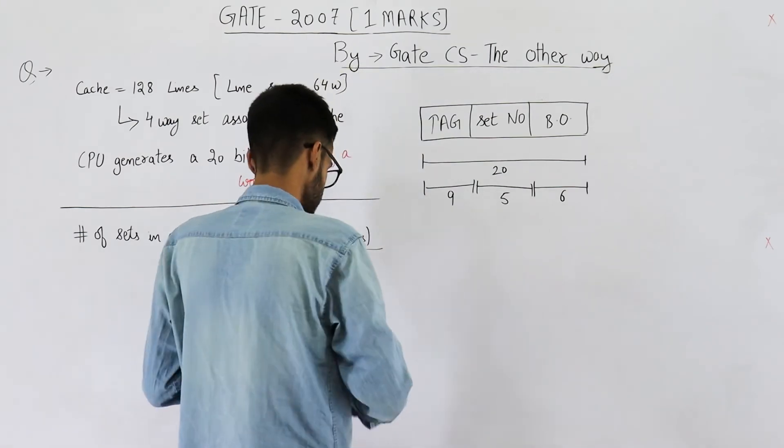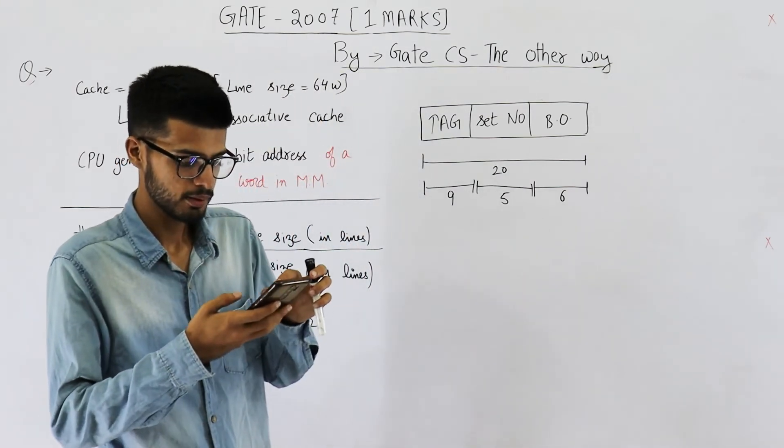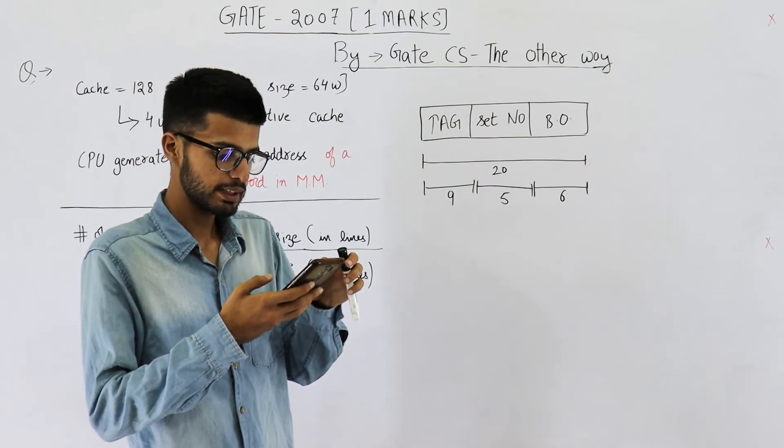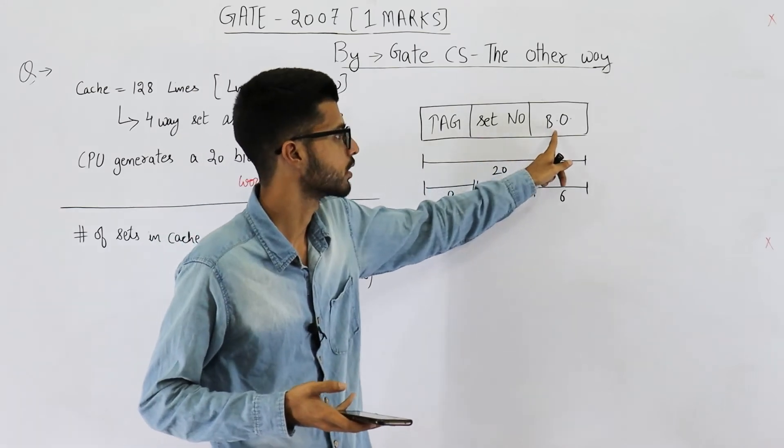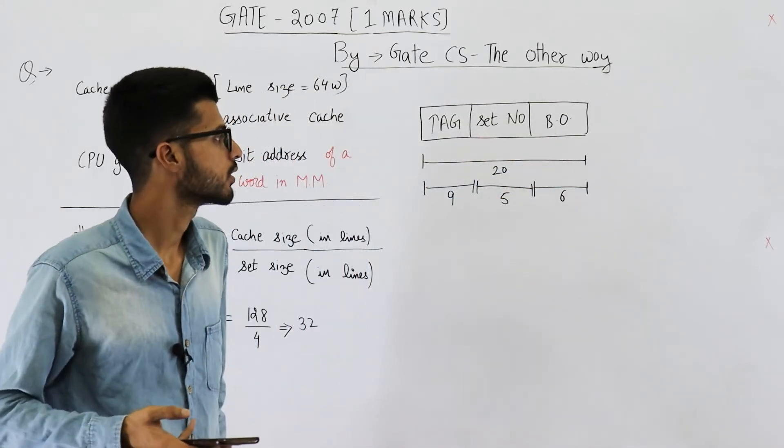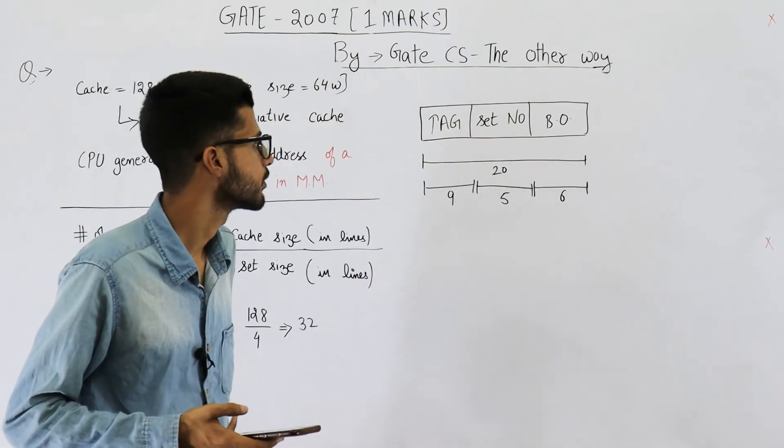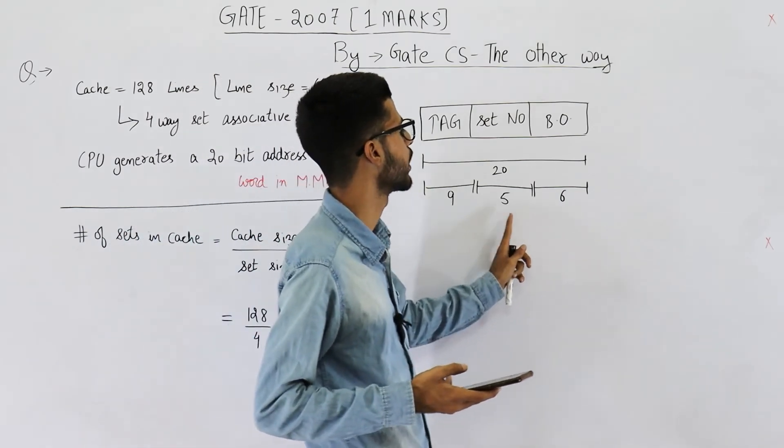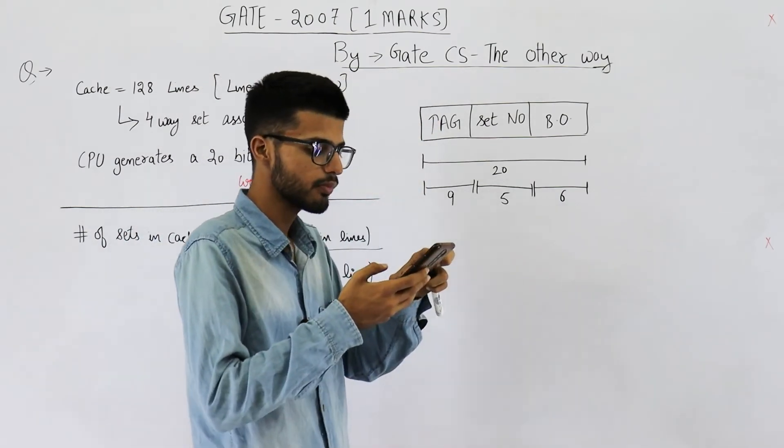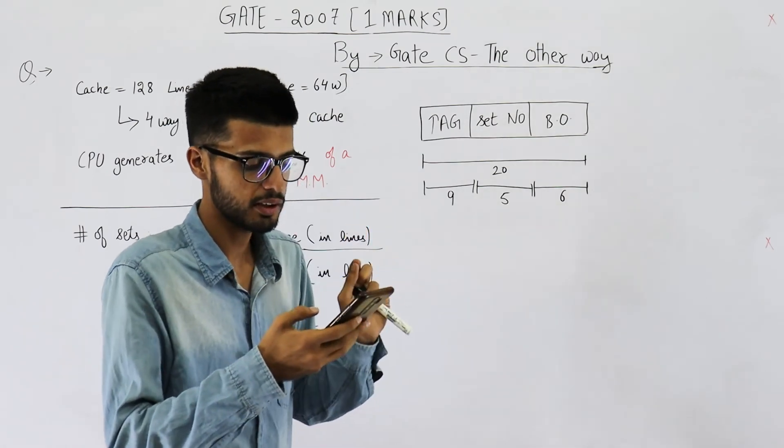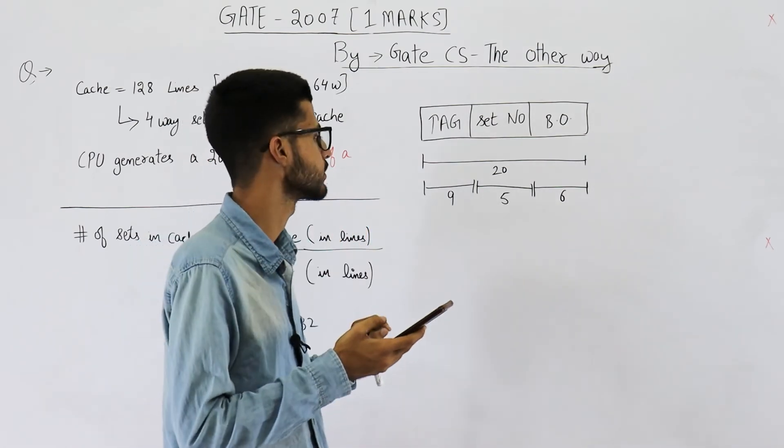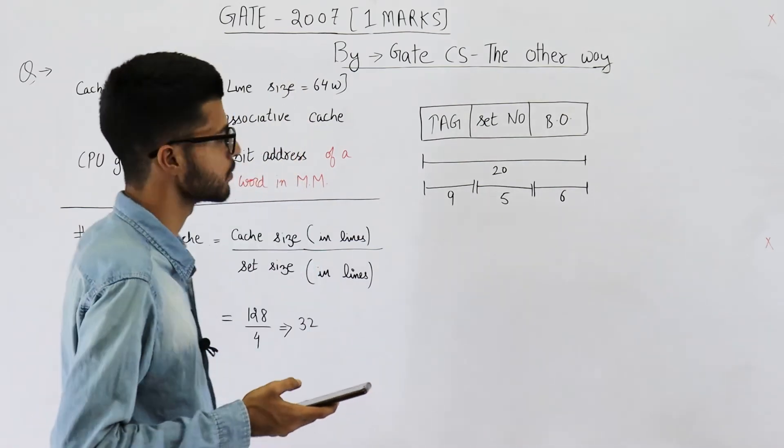So let's see what they were asking in the question. Number of bits in tag, set and word fields. Tag, set and word. Block offset is sometimes also referred to as word. So that will be 9, 5, 6. It is present in options. It's option D: 9, 5, 6. So answer to this question is D part.